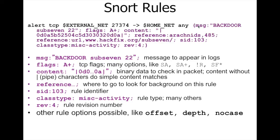Now we'll look at the rule options. The 'msg' option — for example 'BACKDOOR Sub7 2.2' — is the message that appears in the logs. Then 'flags: A+' specifies TCP flags; options include SYN, ACK, SYN+ACK, reset, and SF. The 'content' option holds binary data to check in the packet; we can use pipe characters for binary content or do a simple content match without them.